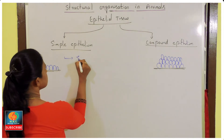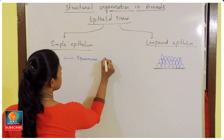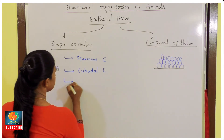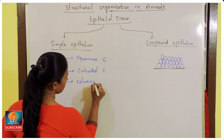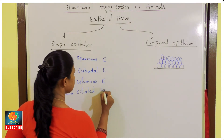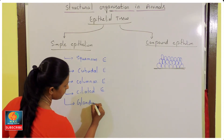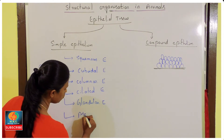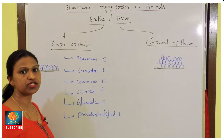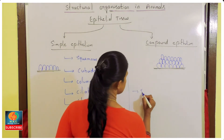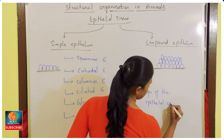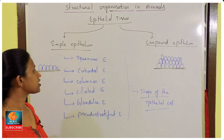Based on the shape of epithelial cells, the types of simple epithelium are: squamous epithelium, cuboidal epithelium, columnar epithelium, ciliated columnar epithelium, glandular epithelium, and pseudostratified epithelium. This classification is based on the shape of the epithelial cell. Take the screenshot — we will discuss them one by one.